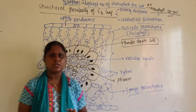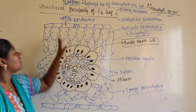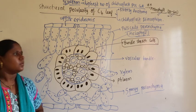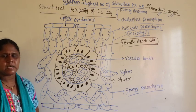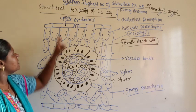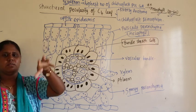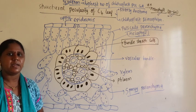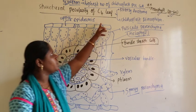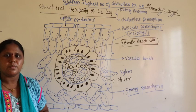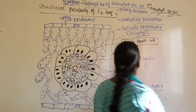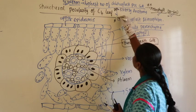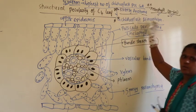Hello students, let us continue with the structural peculiarity of the C4 leaf. What we discussed last class were the very different, peculiar, and rare structural characters we find in the case of the C4 leaf. We studied Kranz anatomy as well as chloroplast dimorphism.